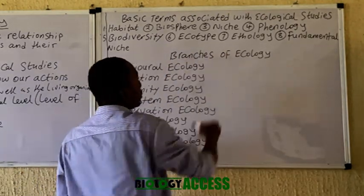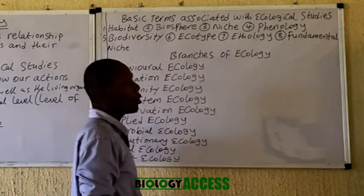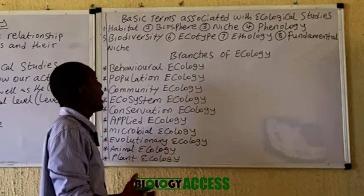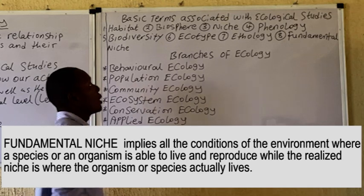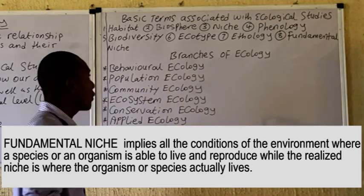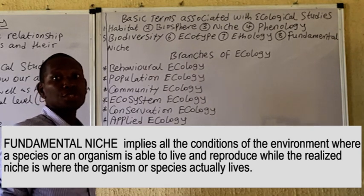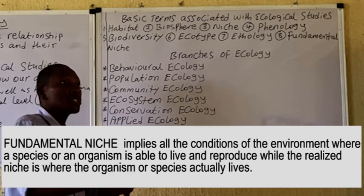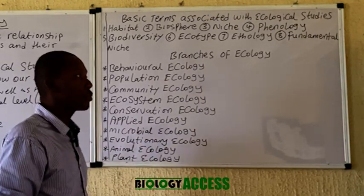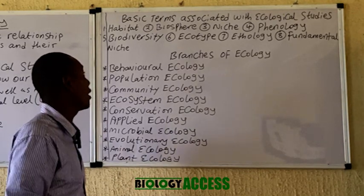We have etiology, which is the scientific study of the behavior of animals — talking about their mating behavior, their defense, and so on. We also have the fundamental niche, which refers to the various environmental conditions which can actually sustain an organism, allowing it to survive and reproduce.